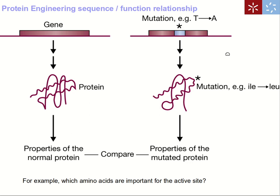Once we have our gene cloned and the protein studied, we may want to elucidate how the protein actually works. If it's an enzyme, we might want to identify the amino acids in the active site or those important for stability. We compare the original protein with one where we have made very specific changes — a specific change in the DNA sequence that translates to a specific amino acid change — and study the difference between these proteins.